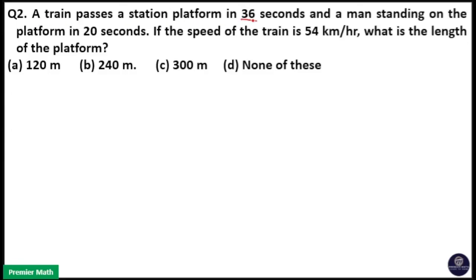A train passes a station platform in 36 seconds and a man standing on the platform in 20 seconds. If the speed of the train is 54 km per hour, what is the length of the platform?